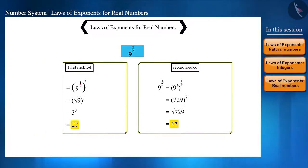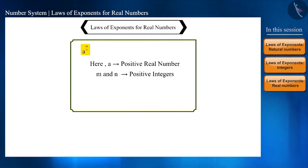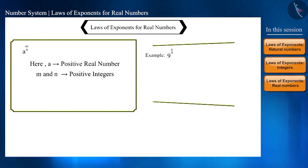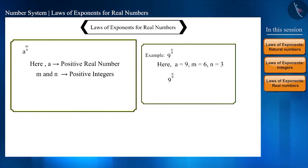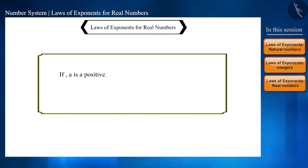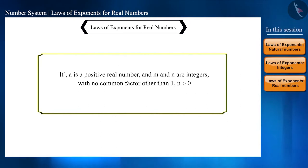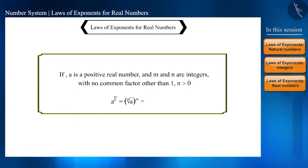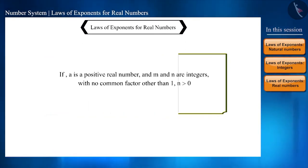If the power of a real number is a fraction that can be simplified, the fraction should be written in its simplest form to make calculation easier. For example, dividing 6 by 9 by 3 gives 2 by 3. From all these facts, if a is a positive real number and m and n are integers with no common factor other than 1 and n is greater than 0, then a raised to the power m by n equals the nth root of a, whole raised to the power m, or the nth root of a raised to the power m.